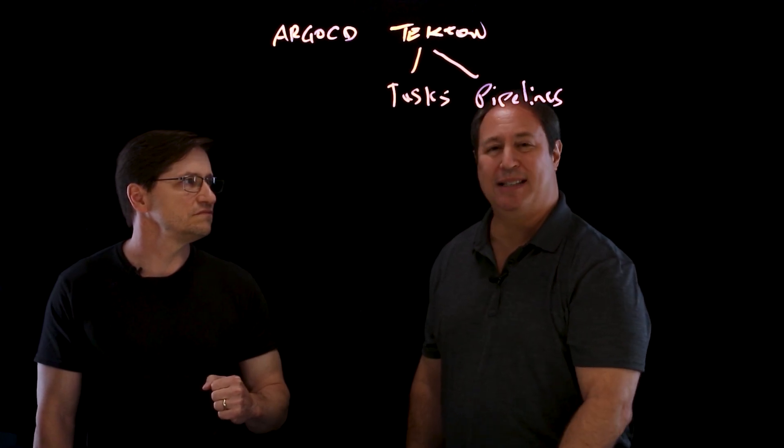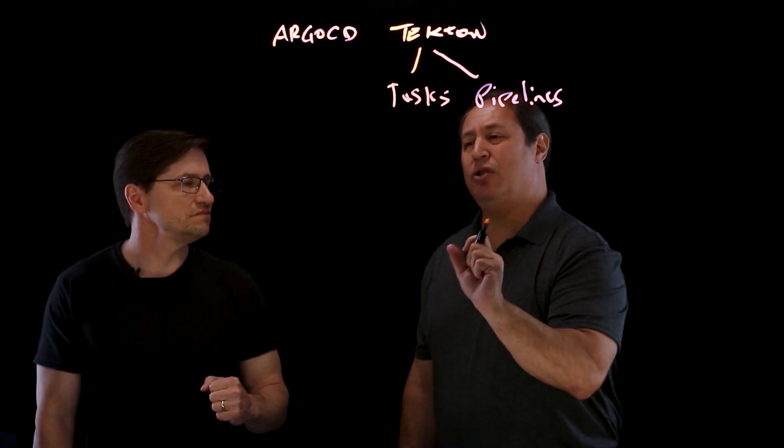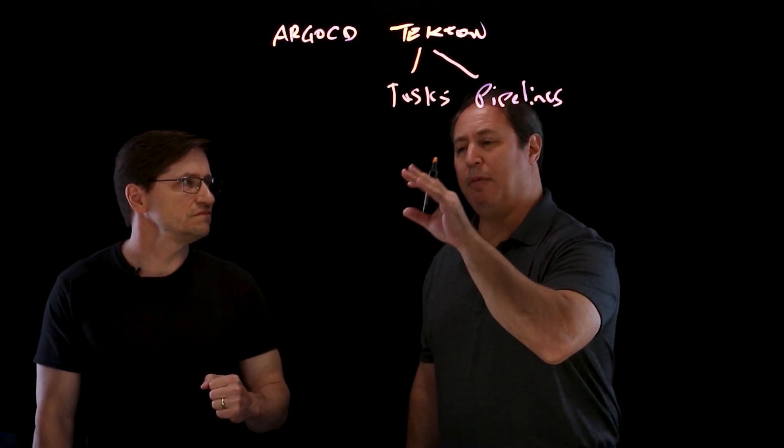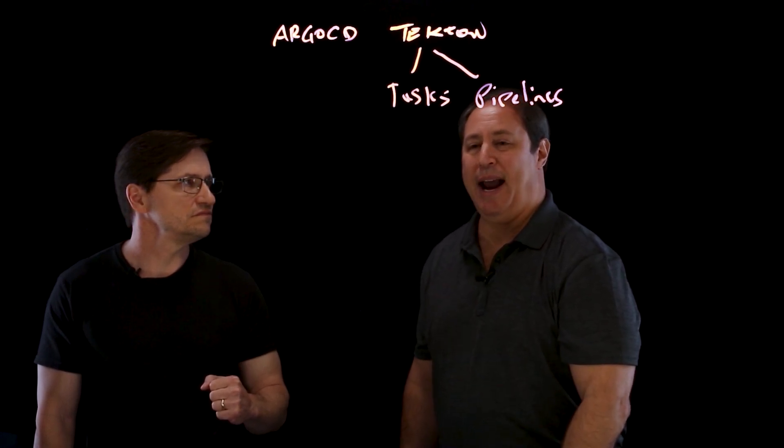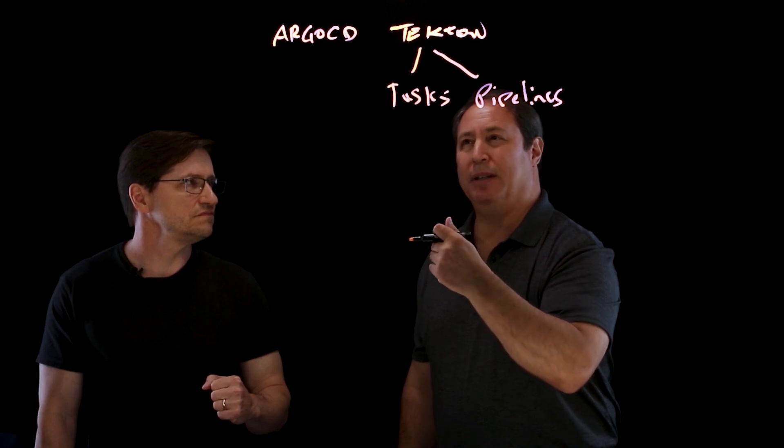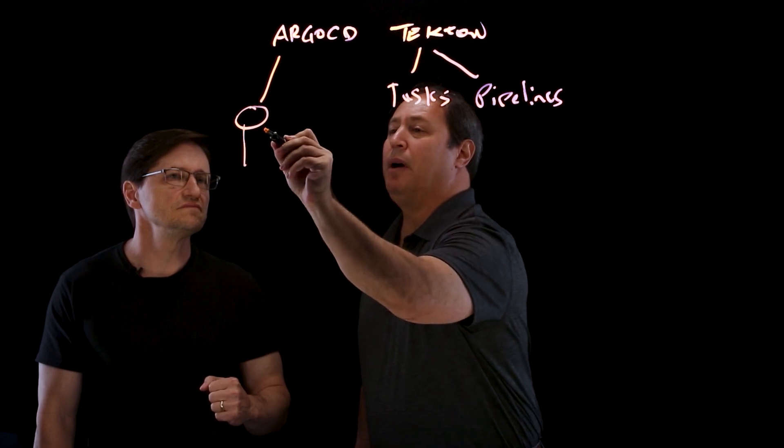So just like Kubernetes is declarative, you can declare everything. Argo CD allows you to put your YAML files, your configuration in a Git repository and declare what you want to happen. And Argo CD, so it's going to pull things from your repo.